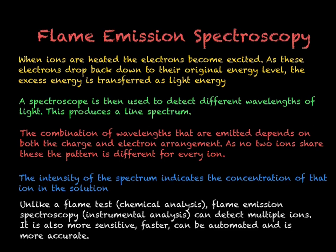Flame emission spectroscopy is an example of instrumental analysis — a test that uses a machine. This is more advantageous than conducting chemical tests on a substance, as instrumental methods are very sensitive, so they can detect even the smallest amounts of a substance. They are also very fast, you can automate the test so it can run whilst you're not there, and they are very accurate.